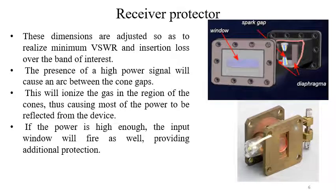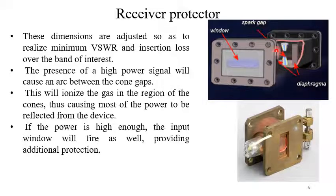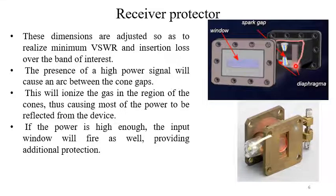In the low power state, the TR tube is a bandpass filter whose characteristics are controlled by the dimensions and spacing of the filter elements and windows. These dimensions are adjusted to realize minimum VSWR and insertion loss over the band of interest. The presence of a high power signal causes an arc between the cone gaps, ionizing the gas in the region of the cones. This causes most of the power to be reflected from the device — the component behaves like a solid metal to the electromagnetic wave, reflecting it rather than allowing it to pass through.